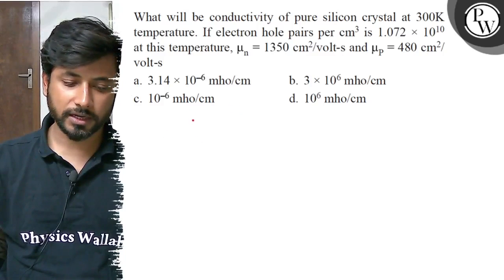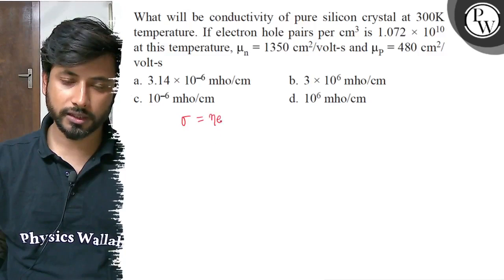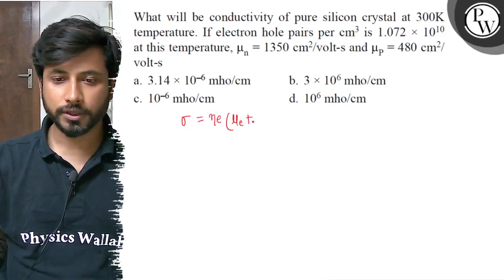thing we have to take out is sigma. Sigma formula is sigma equals to n e (mu e plus mu p).